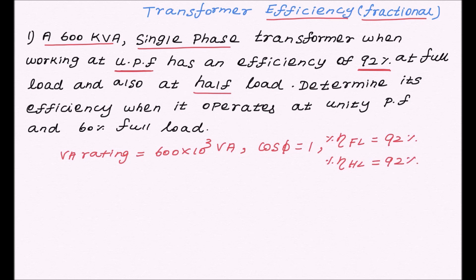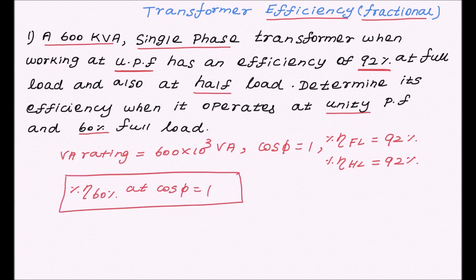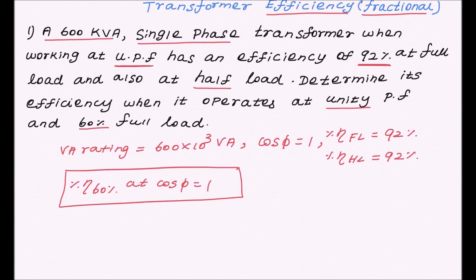We need to determine its efficiency when it operates at unity power factor and 60% of full load — that is, cos φ = 1. In this problem, the iron loss and the copper loss of the transformer are not given, so first we have to calculate the iron loss and the copper loss in order to calculate the efficiency at 60% of the load.